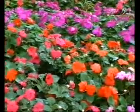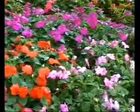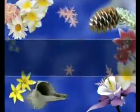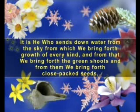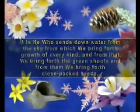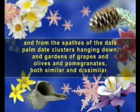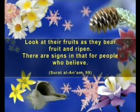Evidence of God's flawless creation can be found in all this fine measure and regularity. The flawless creation of plants has been revealed in a verse from the Qur'an, and we are told this is important proof for believers: 'It is He who sends down water from the sky, from which we bring forth growth of every kind, and from that the green shoots, and from them close-packed seeds, and from the spades of the date palm, date clusters hanging down, and gardens of grapes and olives and pomegranates, both similar and dissimilar. Look at their fruits as they bear fruit and ripen. There are signs in that for people who believe.'